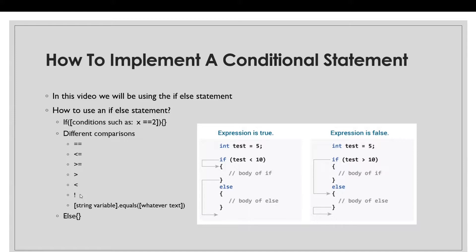If you want X to not equal two — an if statement where X can be any number but two — you put the exclamation point next to the equal sign. If you want X to be anything not greater than two, you put the exclamation point next to the greater than sign, and if you want X to be anything not less than two, you put the exclamation point next to the less than sign. If you're using a string variable, you cannot use the double equal sign; you have to use the string variable name dot equals, and inside the parentheses put whatever text you want to compare the string to.